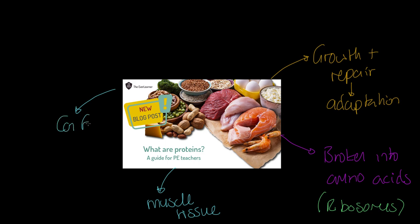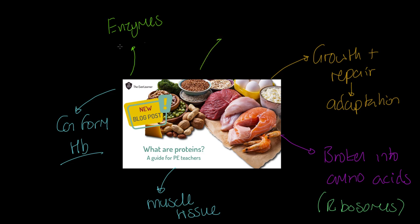Proteins can also form haemoglobin — HB — which is the vehicle for the transportation of oxygen, and to a degree CO₂ as well. So it's really important from a sports science perspective. Proteins also form enzymes — think about your glycolytic and aerobic enzymes, your phosphocreatine enzymes — these are structured through proteins.